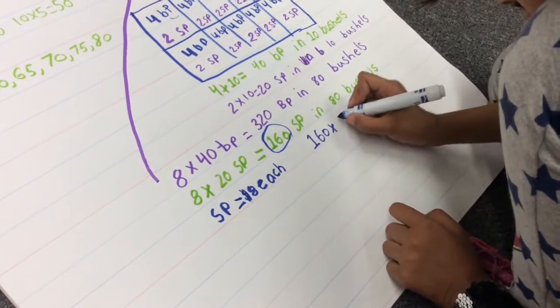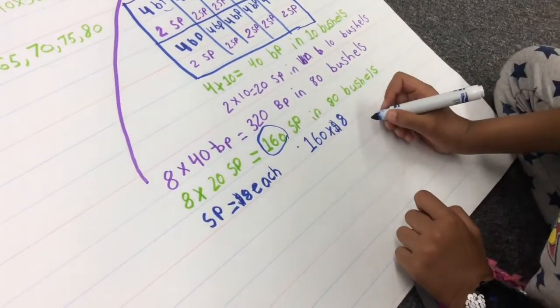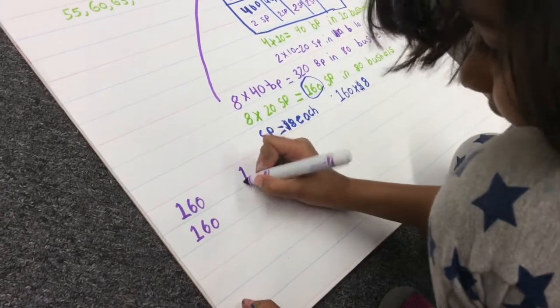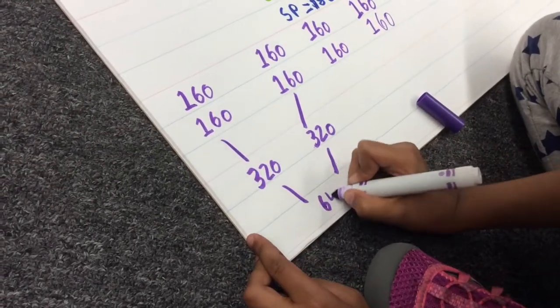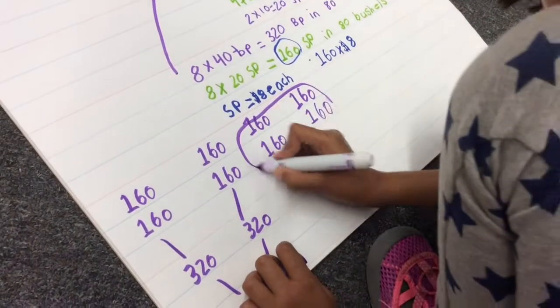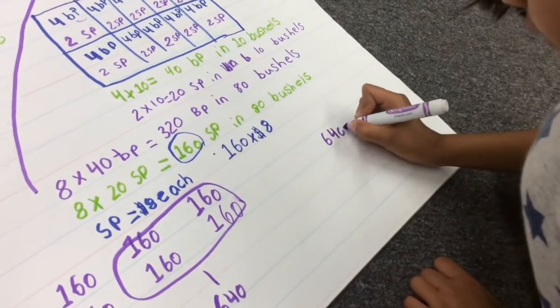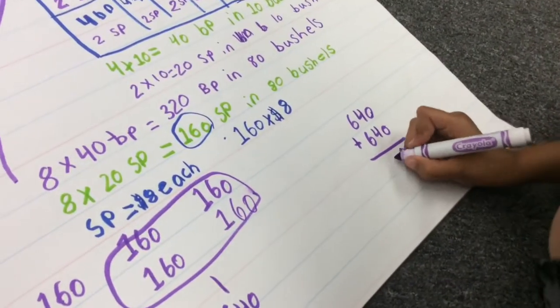The small pies were sold for eight dollars each. So Minha used repeated addition to add one sixty eight times. The one sixties became three twenties. The three twenties became six forty. And the six forties became one thousand two hundred eighty dollars collected from selling the small pies.